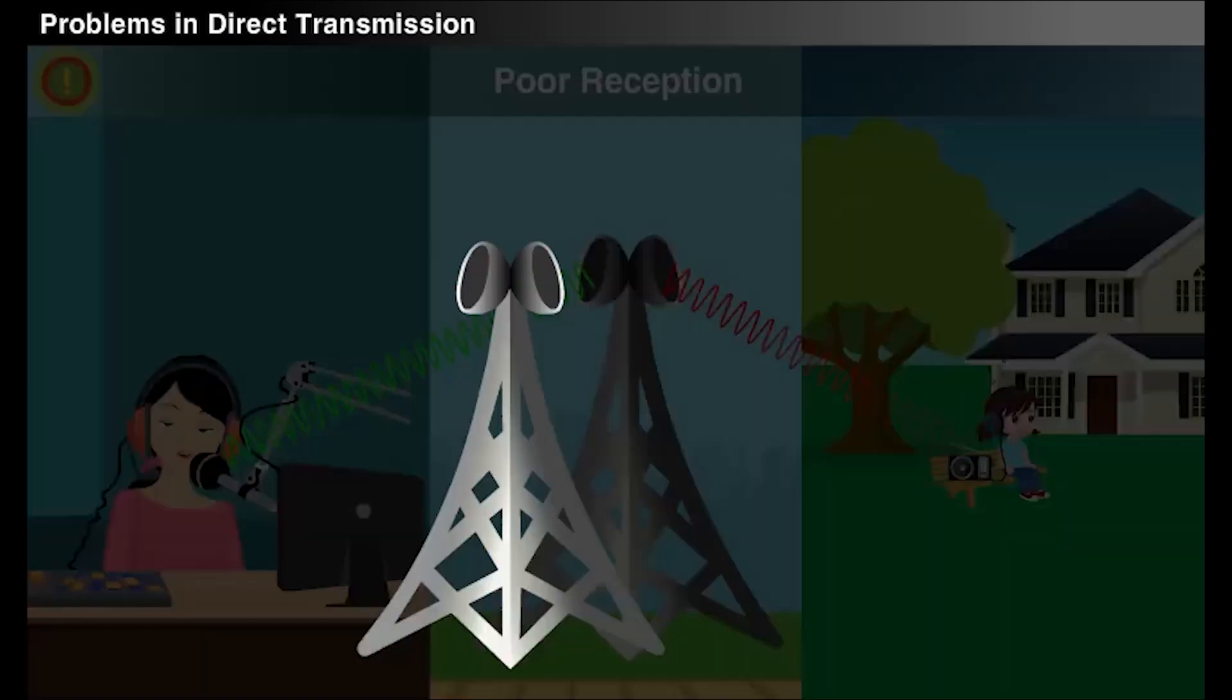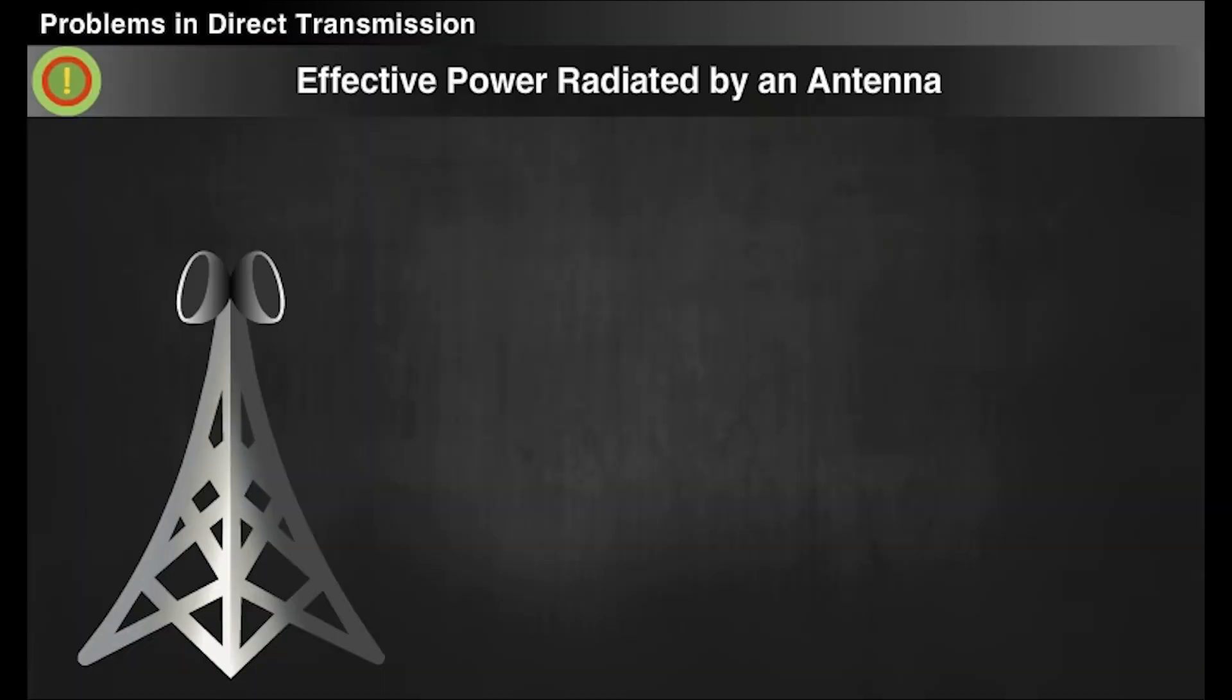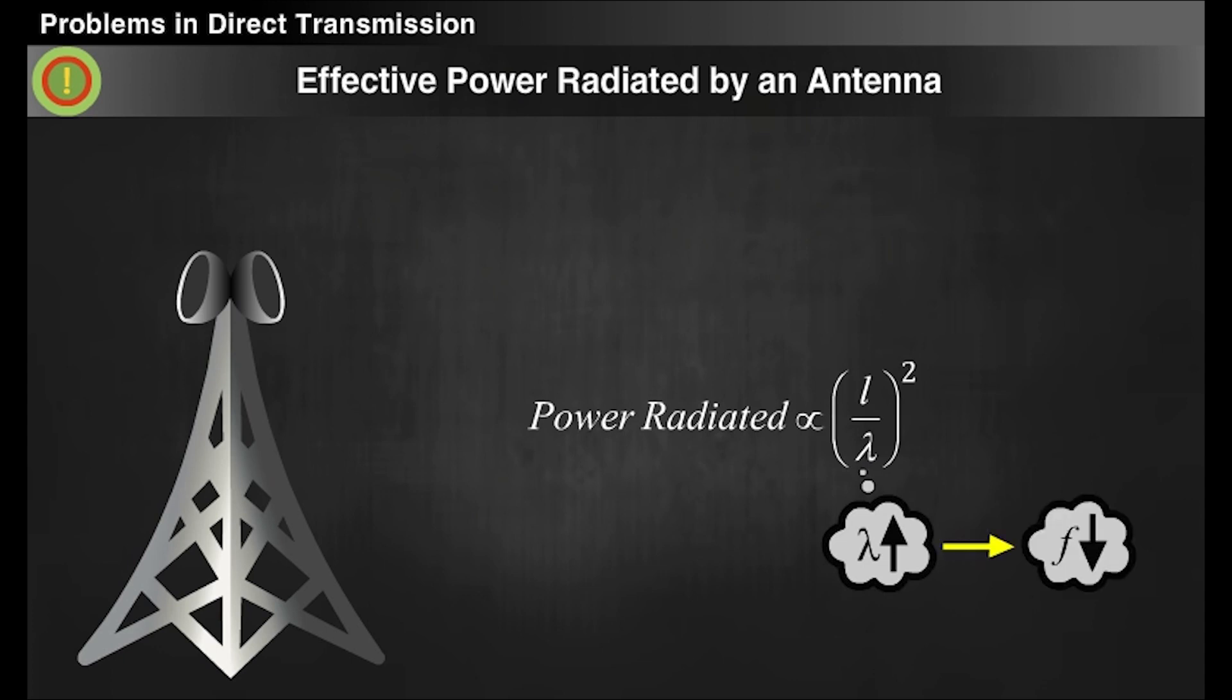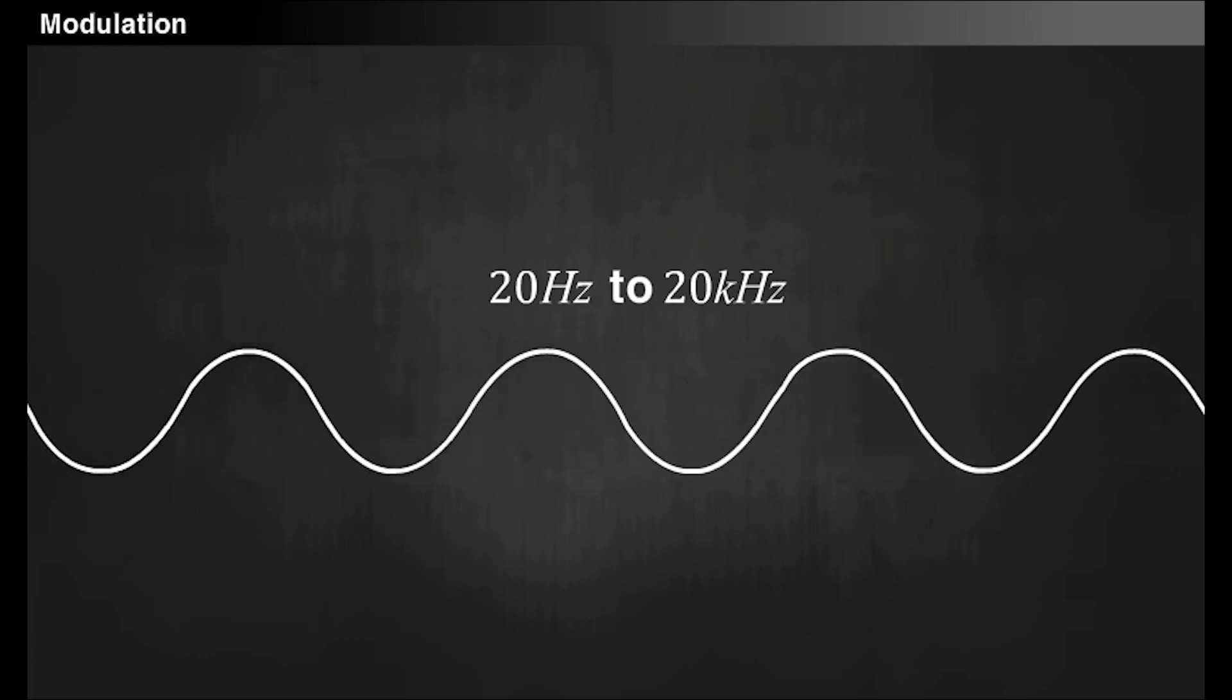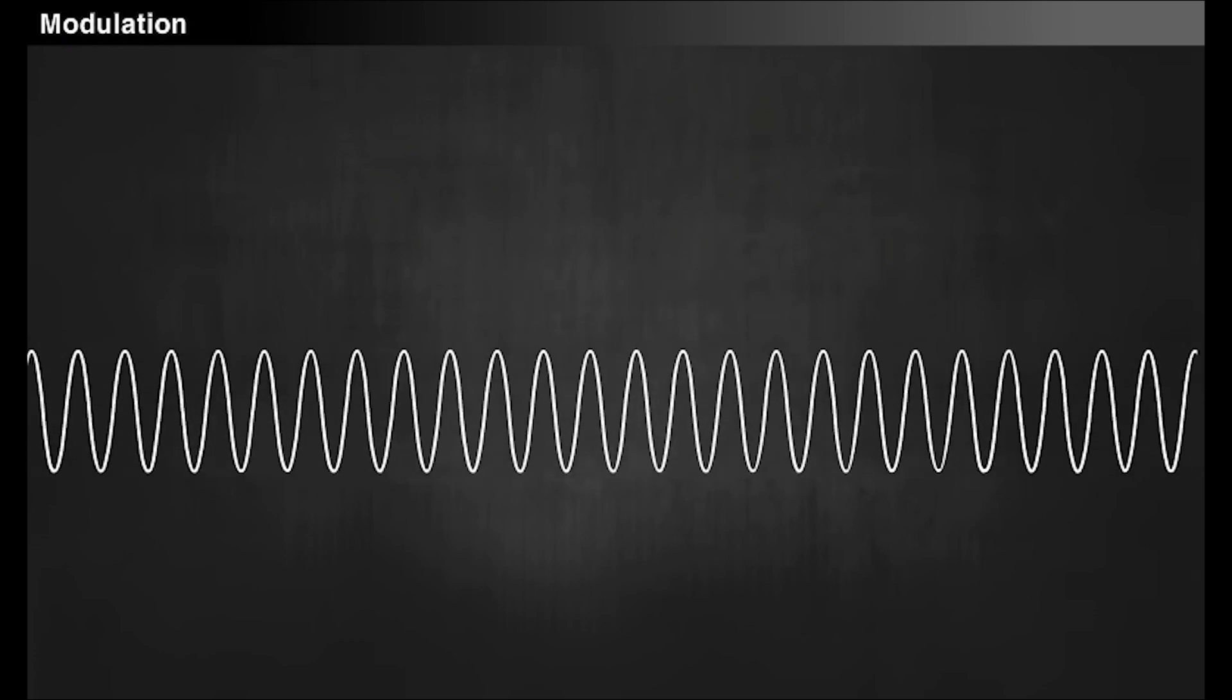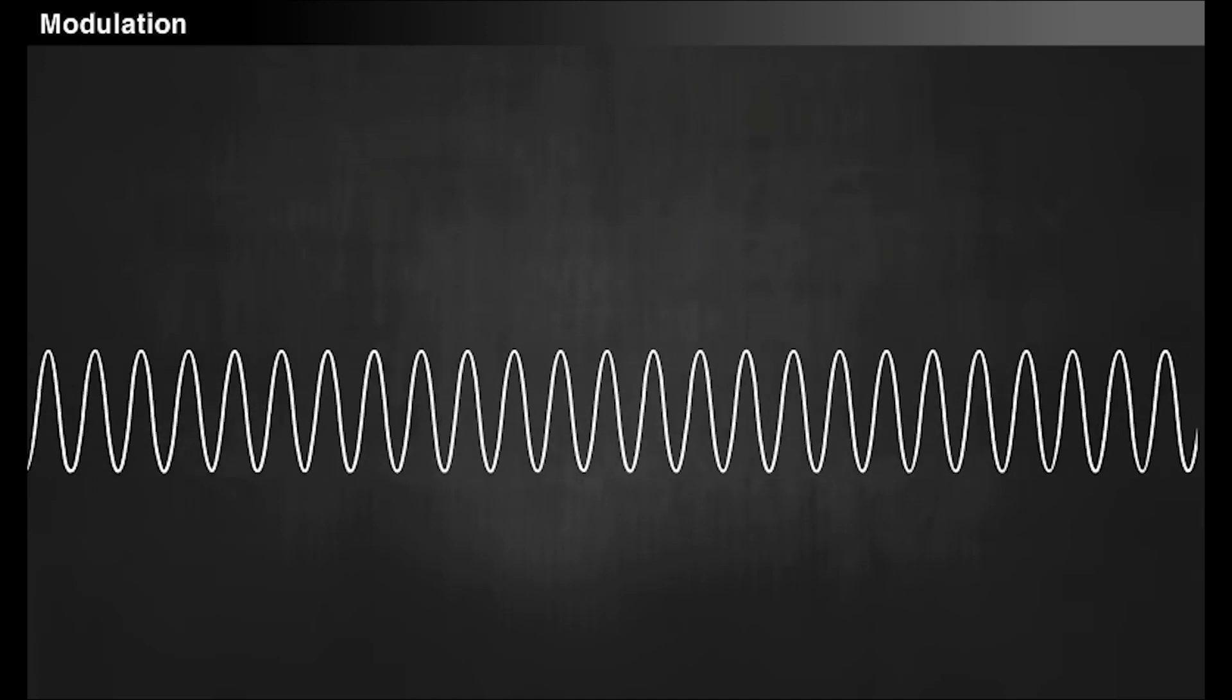On traveling across a longer distance, they become very weak. Another problem is the effective power radiated by an antenna. Theoretically, the power radiated from a linear antenna of length L is proportional to (L/λ)². This shows that when we transmit a message signal of longer wavelength, that is, of low frequency, the power radiated will be very small. The reason for all these problems is the low frequency of the signals. If the frequency is high, we can overcome all these problems.